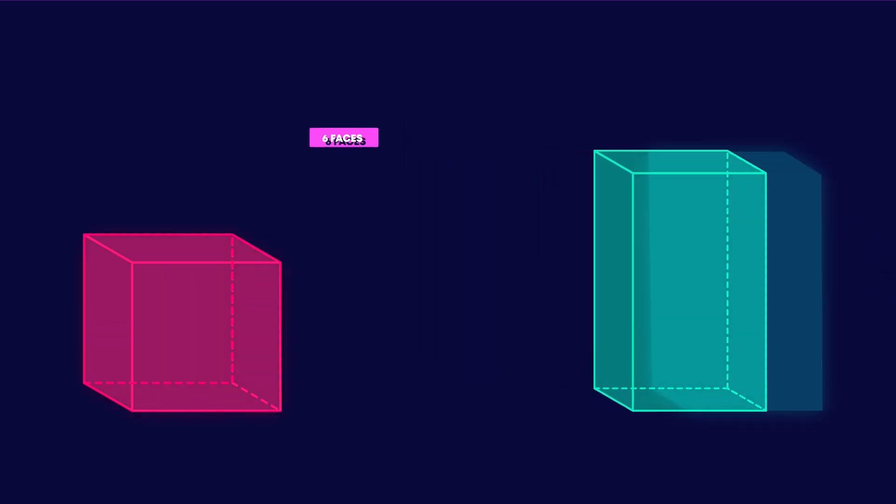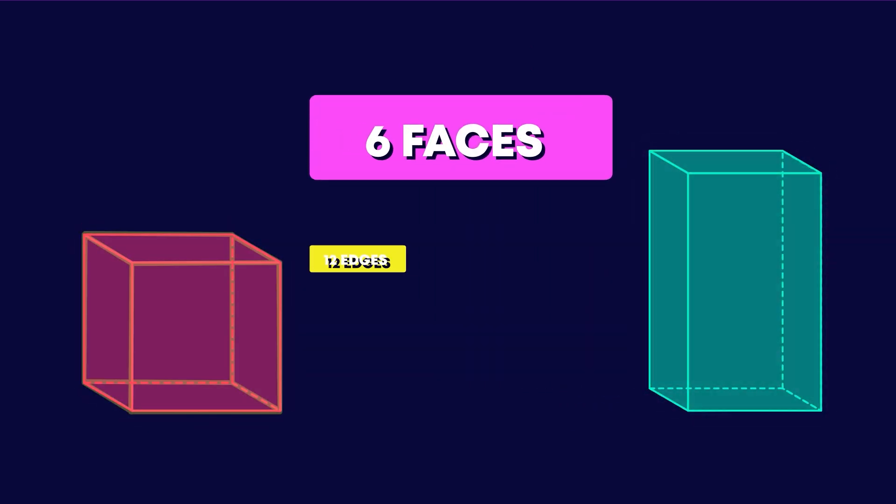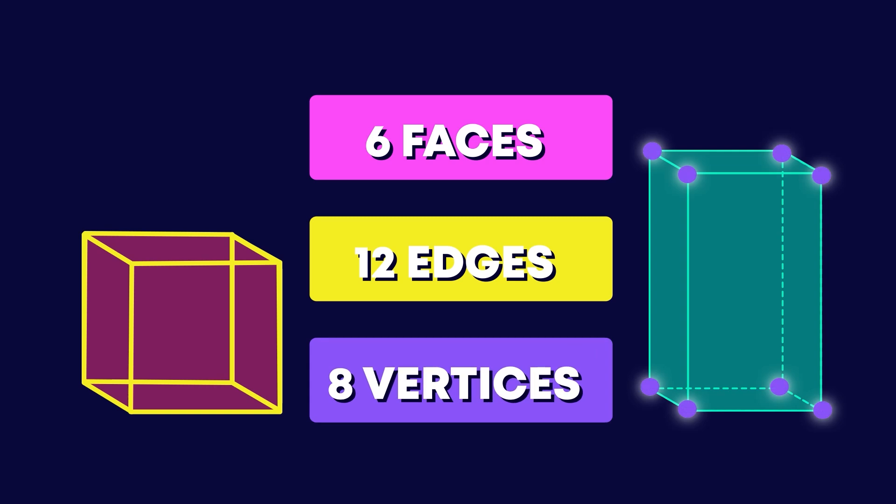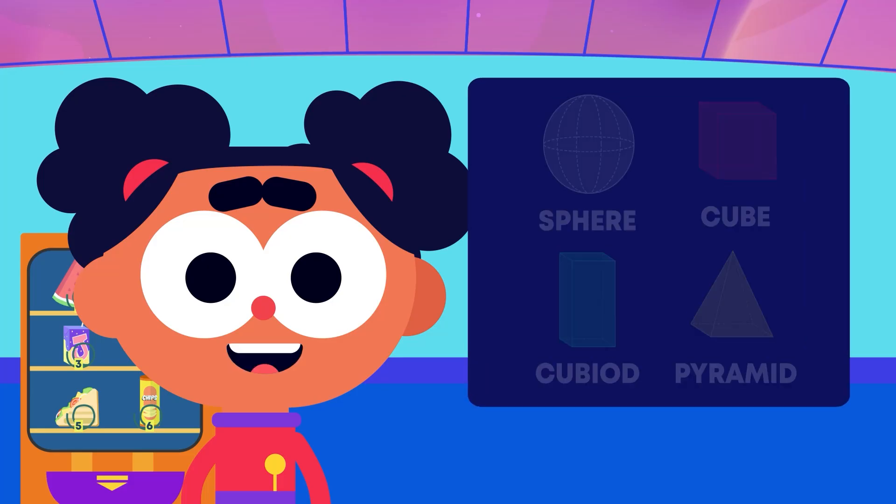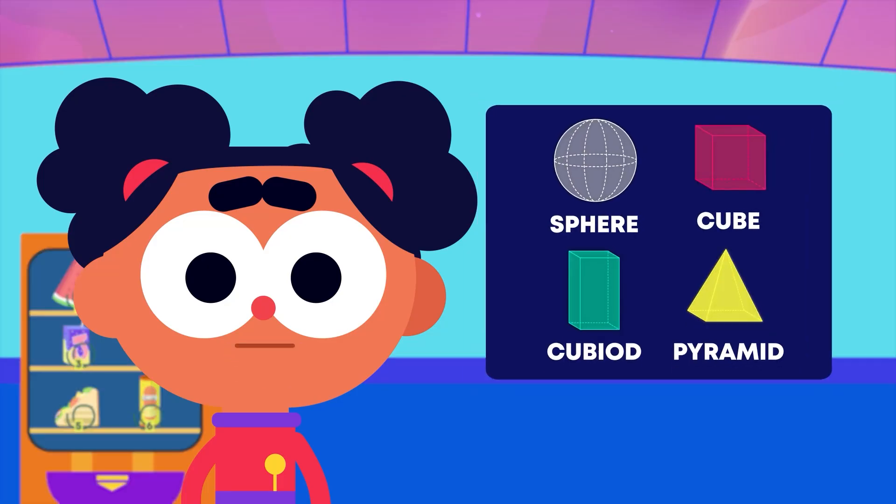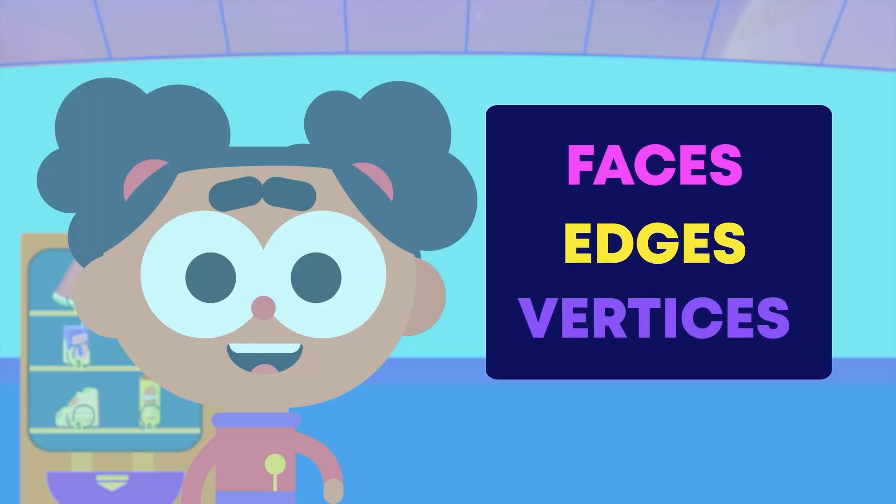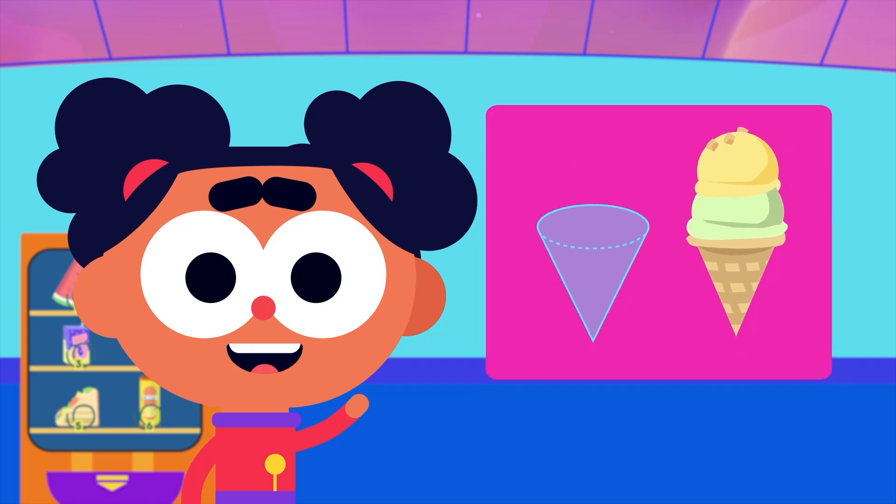Cubes and cuboids have 6 faces, 12 edges and 8 vertices. We have learned to describe the properties of pyramids, spheres, cubes and cuboids using some new words. See you next time to learn how to describe some new 3D shapes.